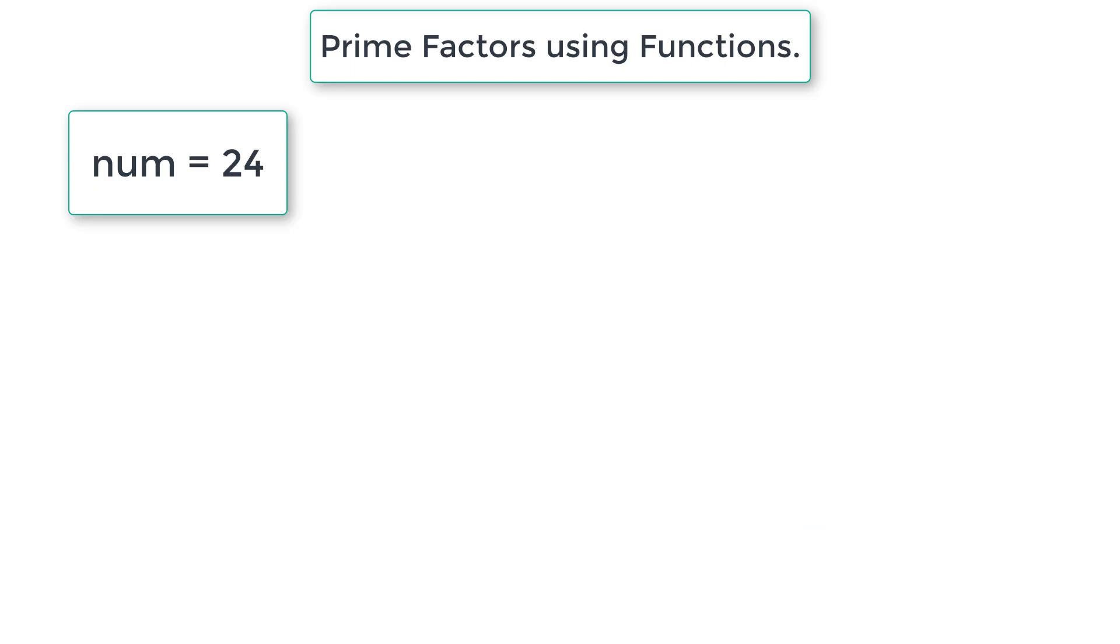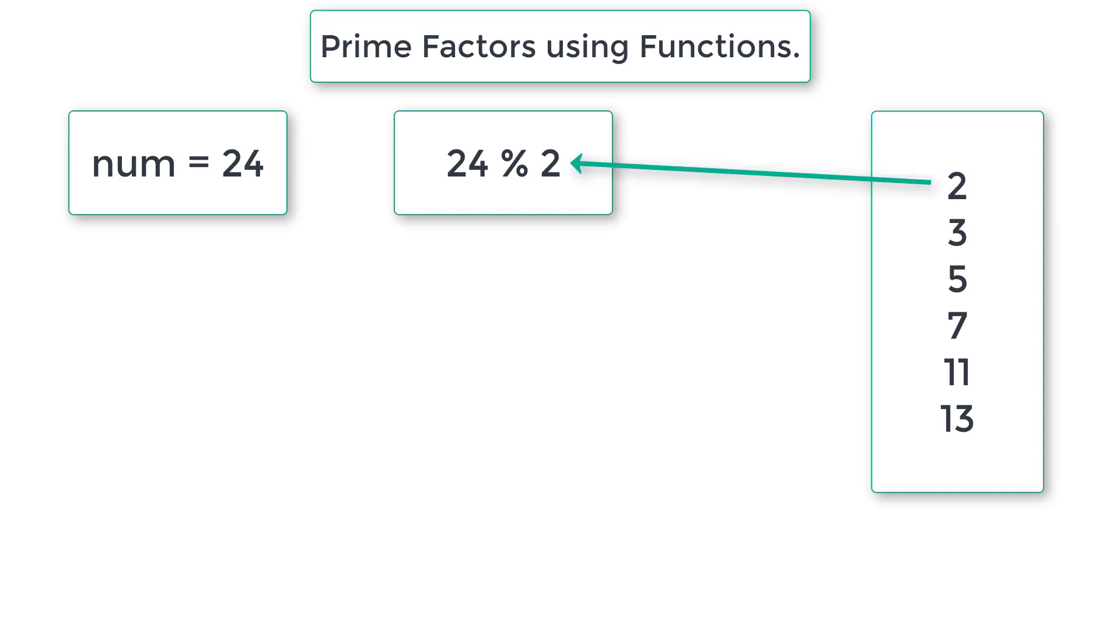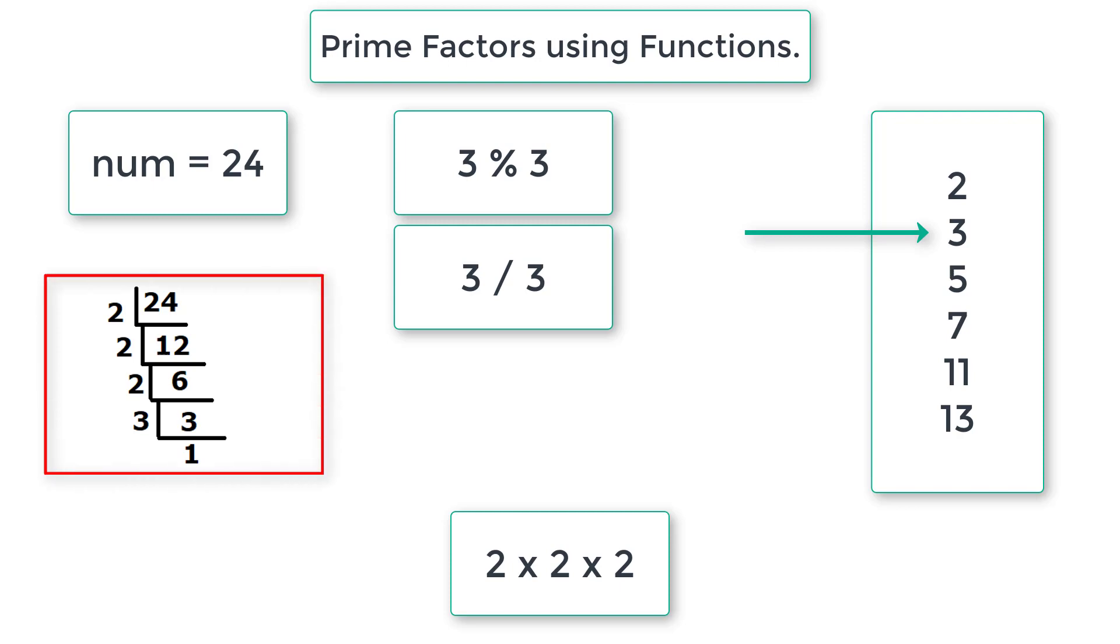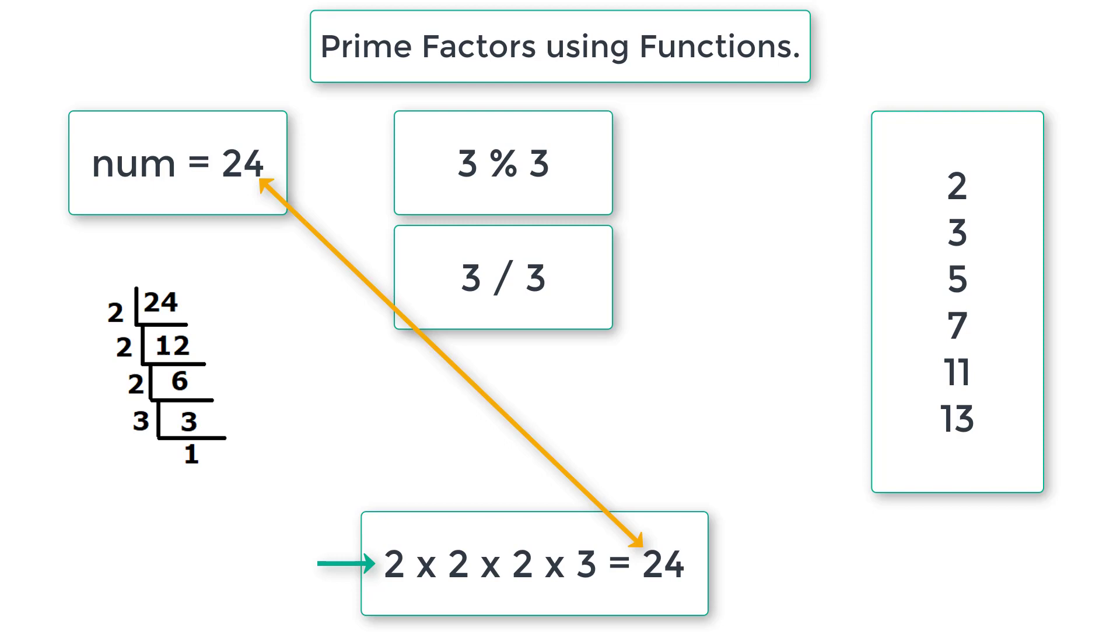If we modulo divide 24 by first prime number that is 2, and reduce the number 24 by dividing it by 2, we will put these two logic inside while loop. 24 is divided 3 times by 2, and then we go to next prime number that is 3. 3 ones are 3. So we need to take all these factors 2, 2, 2 and 3, multiply them and we will get 24.